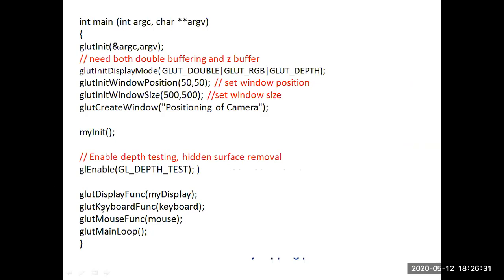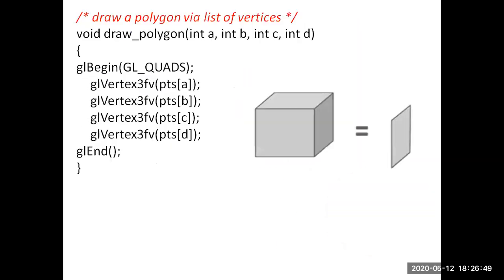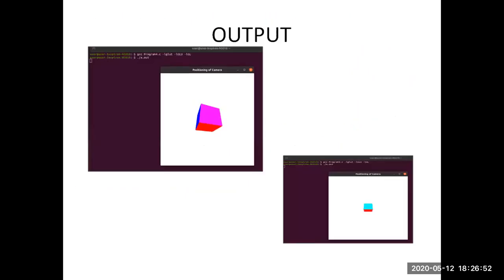In the main function, callback functions registered include myDisplay, keyboard, and mouse. glutMainLoop starts the event processing. The program output shows the color cube. Pressing capital X on the keyboard causes the object to increase in size, and pressing lowercase x causes the object to decrease in size.